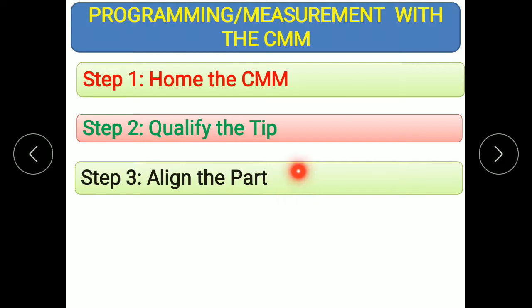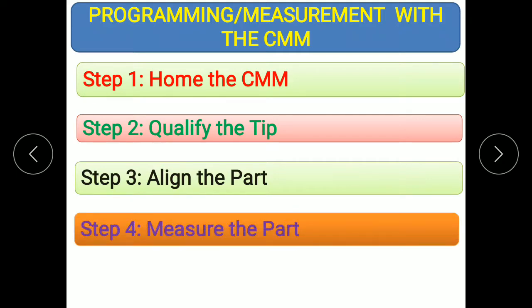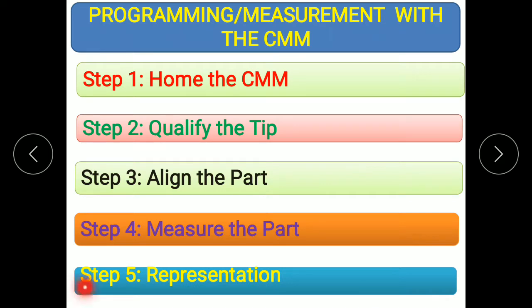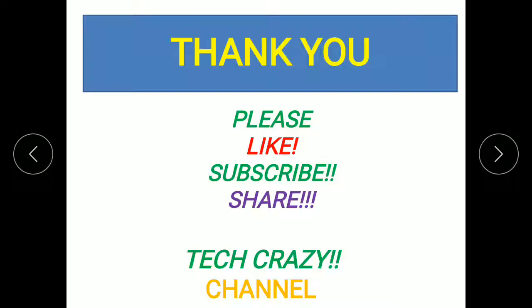Step three is to align the part — place and align the part properly for inspection. Step four is to measure the part — take the different dimensions. Step five is representation — converting the measured data into a particular format or required representation. These are the different steps followed in measurement using the CMM. Thank you for watching this video.